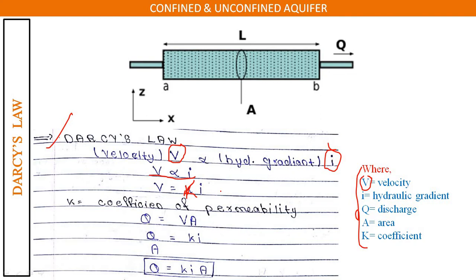We know that discharge q equals area times velocity. Substituting the value of velocity as k times i, we get the equation: q = k × i × a. So discharge equals coefficient of permeability times hydraulic gradient times area.